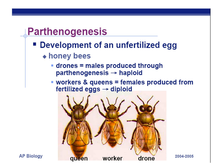Queen bees reproduce normally: a haploid egg fertilized by haploid sperm forms a diploid zygote that becomes a worker. However, when the queen lays unfertilized eggs, those haploid eggs can undergo mitosis and develop into a drone by itself. All the genetic information is available in that one set of chromosomes — the haploid cells don't require an extra set of chromosomes to perform mitosis.